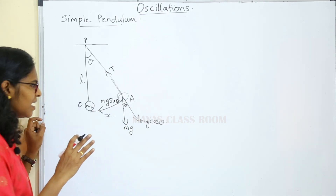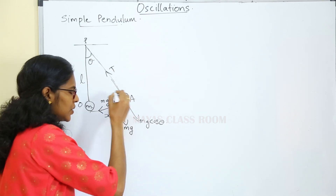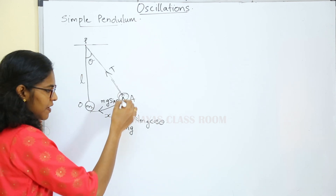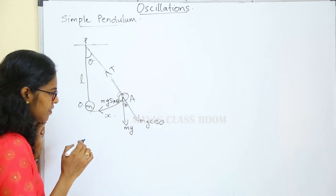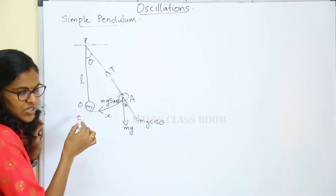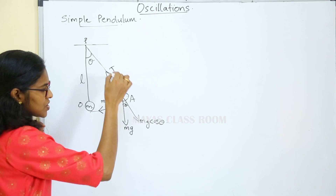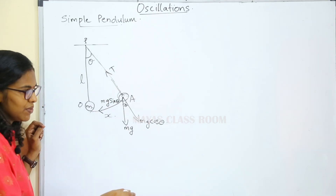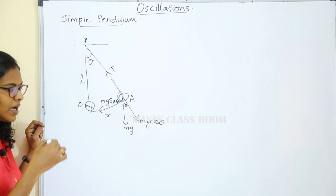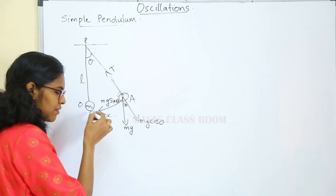It is clear that the two forces acting are the weight and the tension along the string. We resolve them into the radial component and the tangential component. The radial component and tension cancel each other. The unbalancing component is the tangential component, which becomes the restoring force.